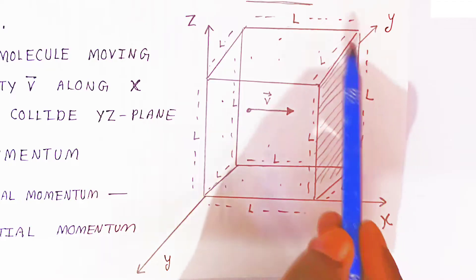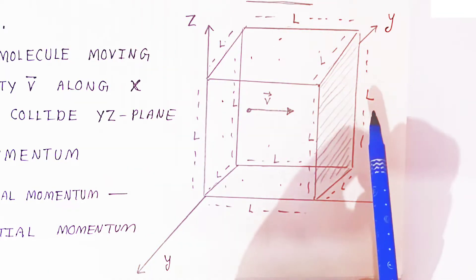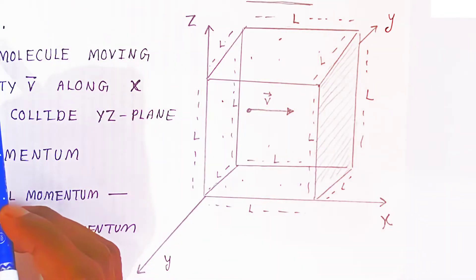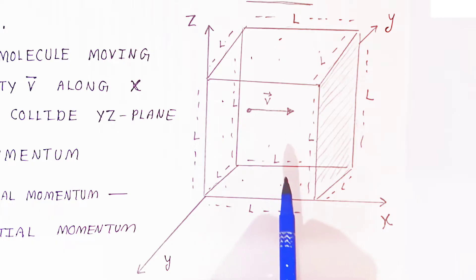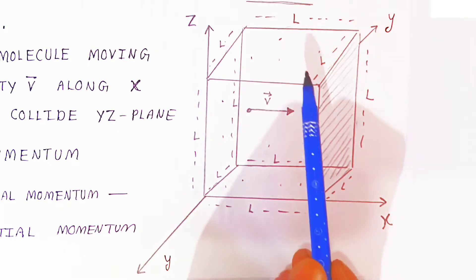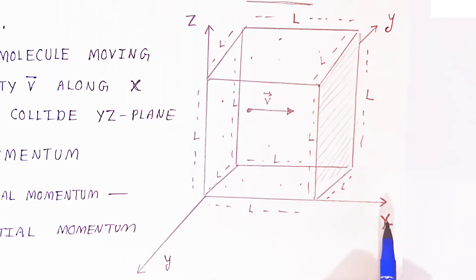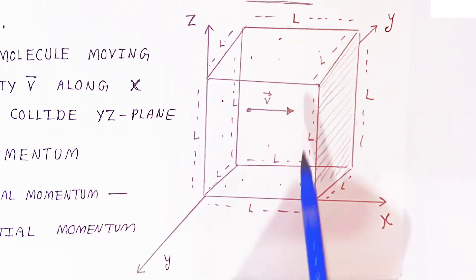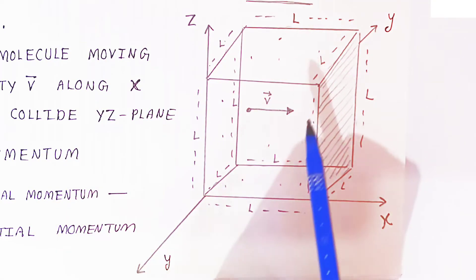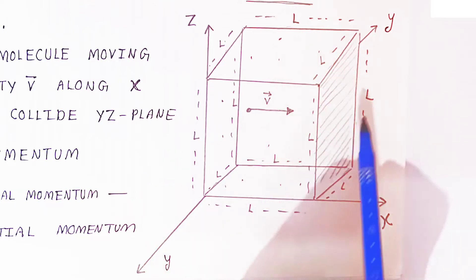Because it is a cube, all sides are equal. So we have taken L as the length of the side of the cube. Now because it is a three-dimensional figure, it has an x-axis, y-axis, and z-axis. We have kept the cube this way — so this is how you have to draw the diagram.